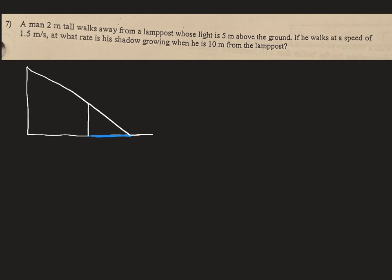Now, things that stay the same, we can label on our diagram. Anything that changes, though, has to be a variable. So his height, the man, two meters, will not change. So that can be labeled as 2. The light five meters above the ground, that will not change either. So that can be labeled as 5.